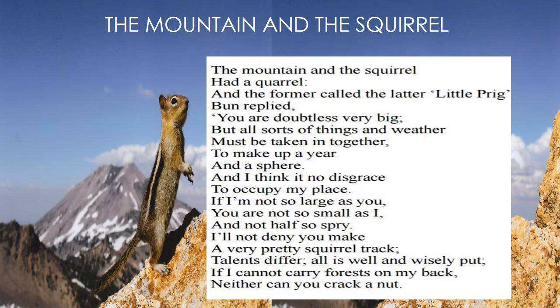So what happened? The mountain and the squirrel had a quarrel, and the former called the latter little prig one day. Former means the first of the two, and the latter means the second of the two. Prig means a person who is very narrow minded — a person who behaves as if he or she is superior to others. Here, the former is the mountain and the latter is the squirrel. The mountain called the squirrel small and tiny — called the squirrel little prig.